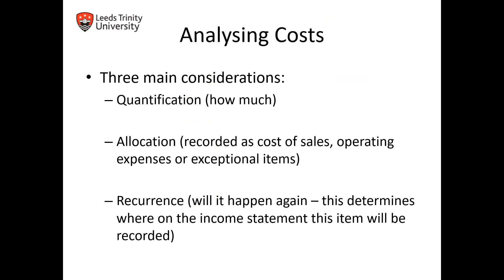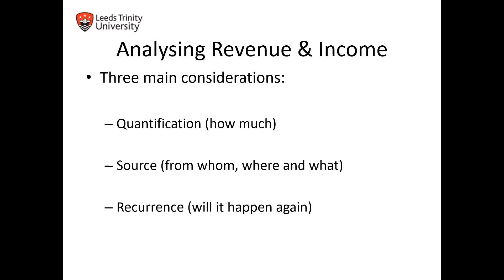At the end of the year we want to see how much we have actually earned. There are three main considerations. First, quantification: how much we are selling and how much we have used. Second, allocation: recorded as cost of sales, operating expenses, or exceptional items. Third, recurrence: does it happen again, by how much, how are we going to prevent it, and in terms of revenue, how are we going to improve it.